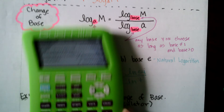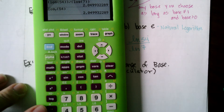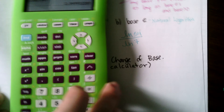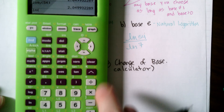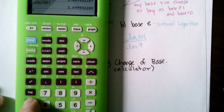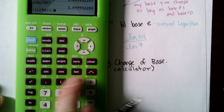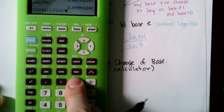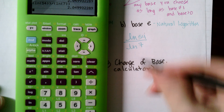54 divided by the natural log of the original base, which was 7. The natural log button on the calculator is next to the 4. Entering ln(54) divided by ln(7) gives the same result: 2.0499.